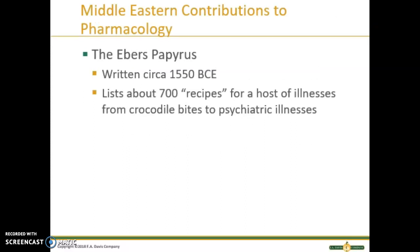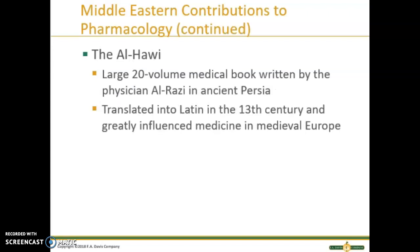The next society is the Middle Eastern contributions to pharmacology. The Ebers Papyrus was written circa 1550 BCE and lists about 700 recipes for a host of illnesses, from crocodile bites to psychiatric illness. The Al-Hawi is a large 20-volume medical book written by the physician Al-Razi in ancient Persia. It was translated into Latin in the 13th century and greatly influenced medicine in medieval Europe. Through trial and error, these ancient cultures discovered treatments for many conditions, and the act of writing them down was priceless.